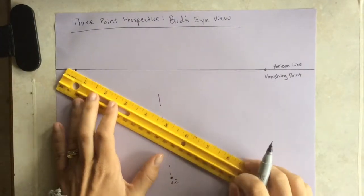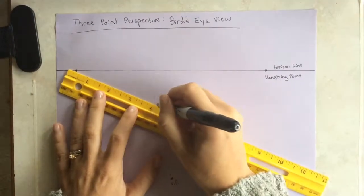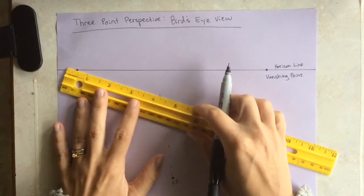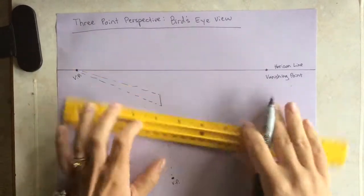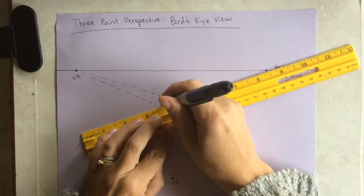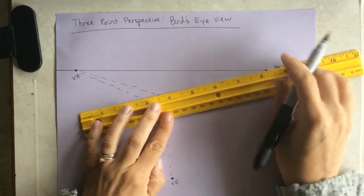First thing you want to do is draw a line that connects to the downward vanishing point, and then take each side of the line and connect it to the side vanishing points.